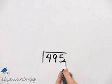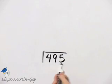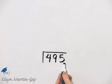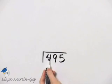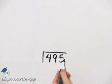What's the next largest prime? That would be three. Will three go into this number evenly? Remember it does if it goes into the sum of the digits.